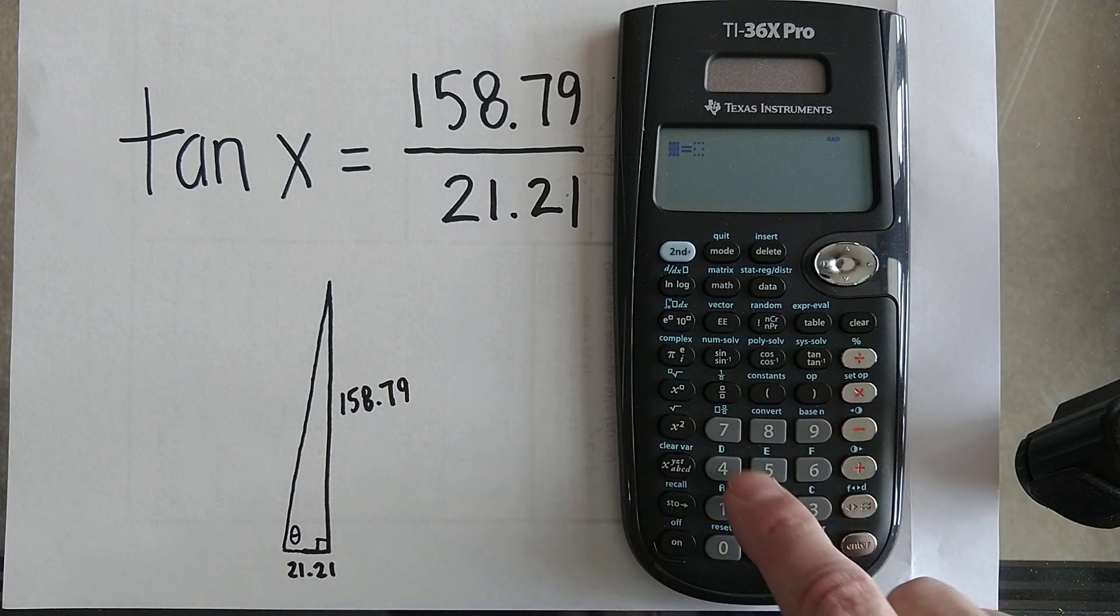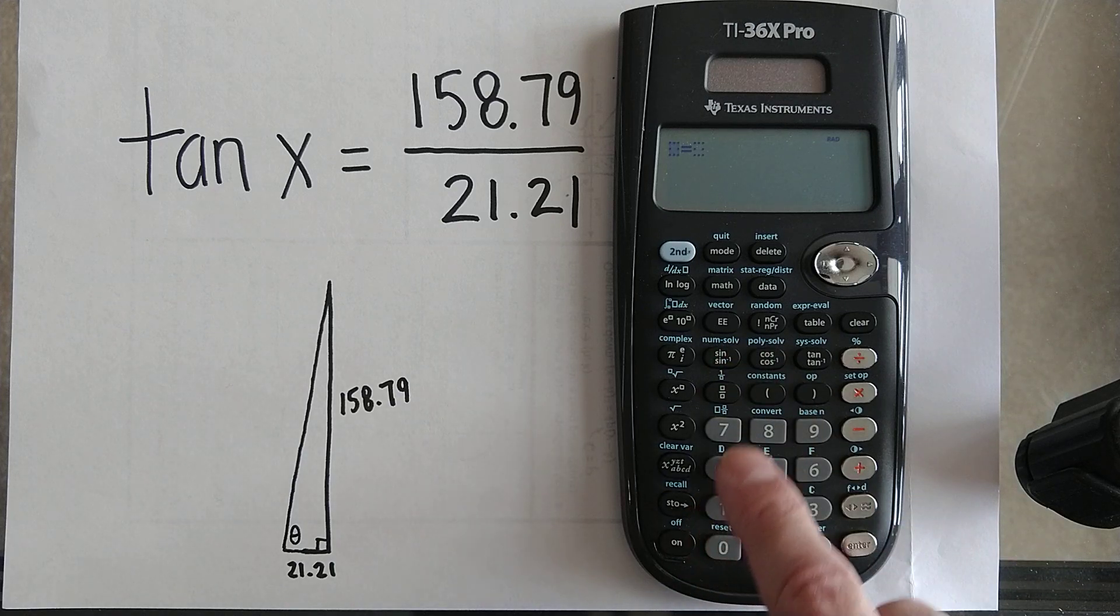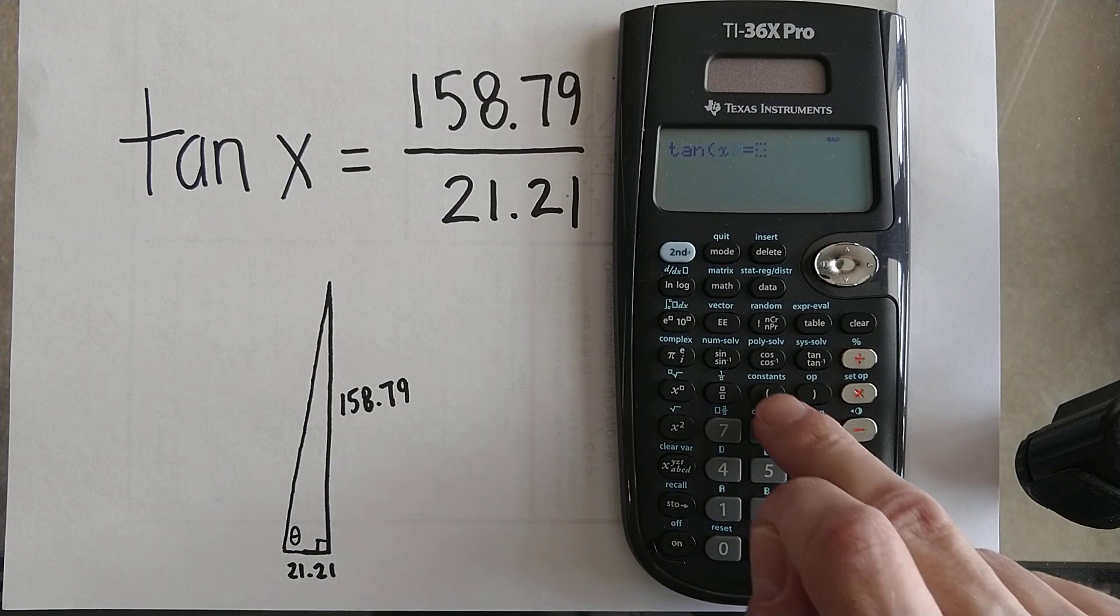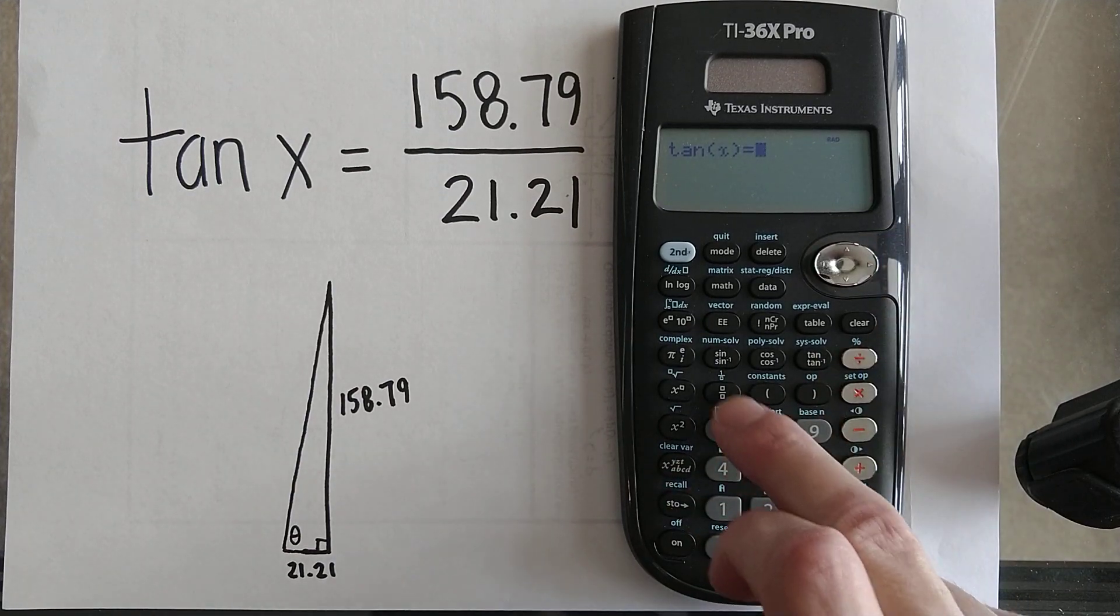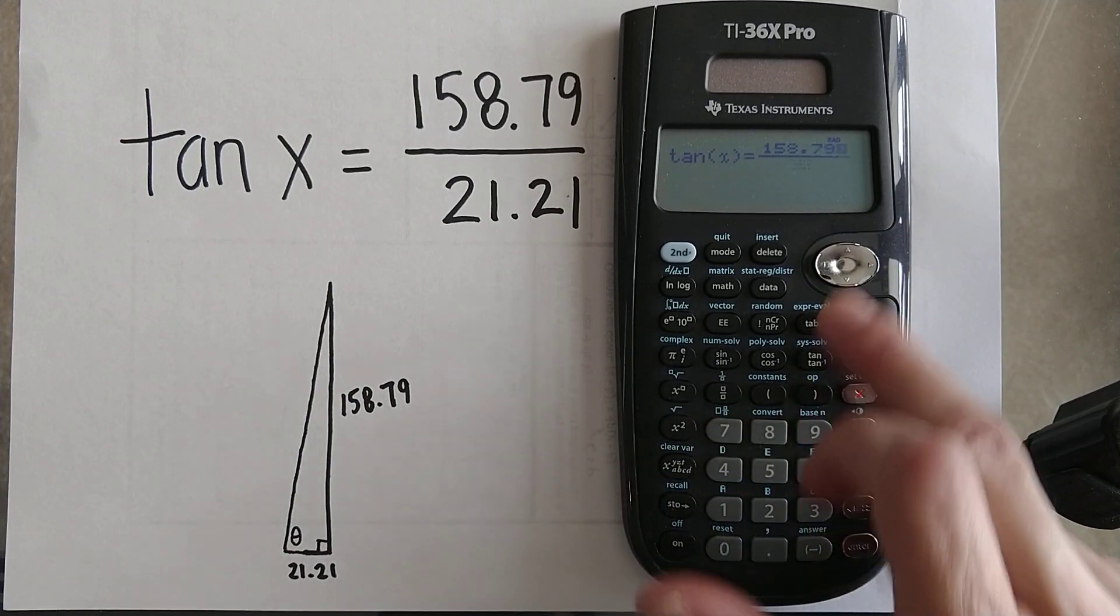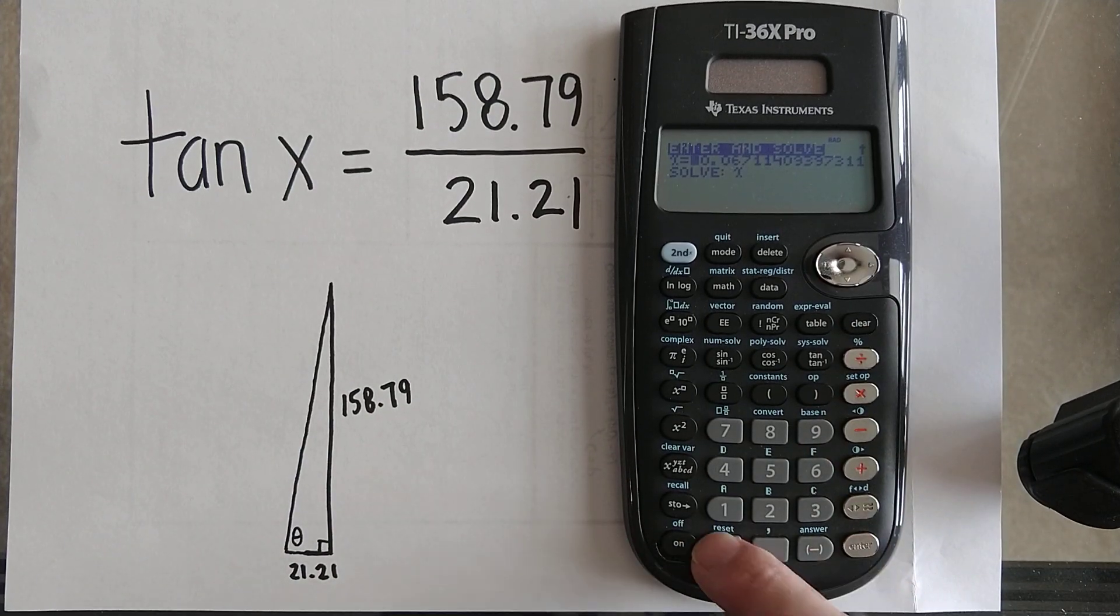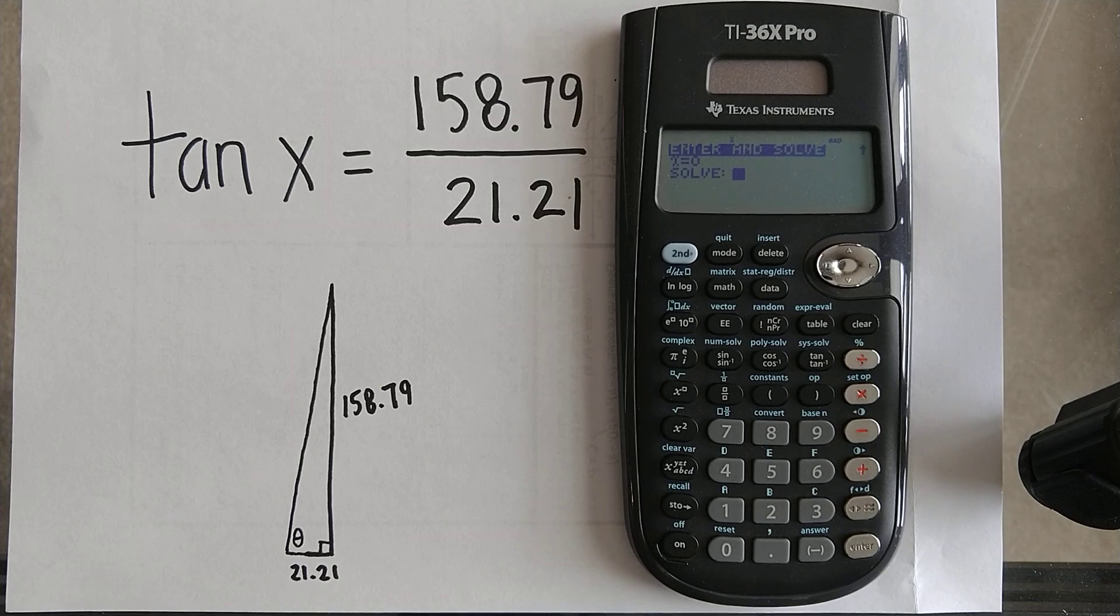We're going to do tangent of X. Hop to the other side: 158.79 over 21.21. We'll guess that it's zero, and we'll tell it to solve for X.